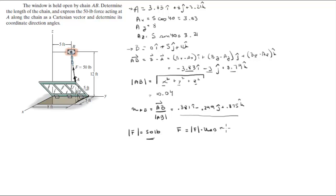You get that the Cartesian vector form of the force is negative 19.05i minus 14.95j plus 43.75k. Now I want you to find the coordinate direction angles.